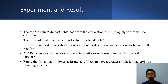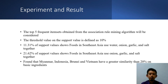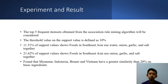For the experiment and results, the top 5 frequent itemsets obtained from the Association Rule Mining algorithm will be considered, using a threshold support value defined as 10%. We found that 11.32% of support values show that food in Southeast Asia uses water, onion, garlic, and salt together — a trivial finding. Additionally, 21.62% of support values show that food uses onion, garlic, and salt together, which is also a trivial finding.